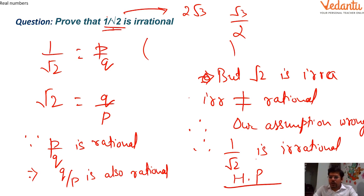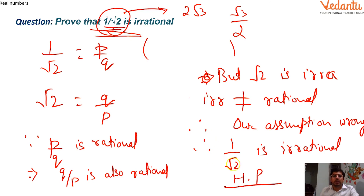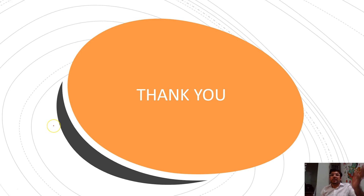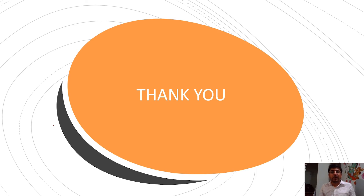Never worry that fewer steps means fewer marks — this is exactly the solution prescribed by NCERT. In board exams you don't need to re-prove √2 is irrational; just state it. However, follow your school teacher's instructions for school exams. I hope this session was helpful. It was a shorter session, but I'm sure it will help you a lot. See you in the next session — bye and take care.